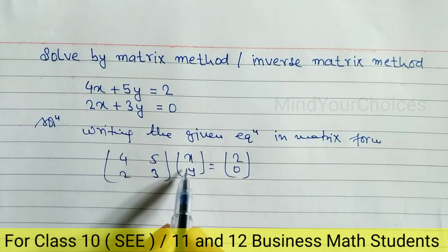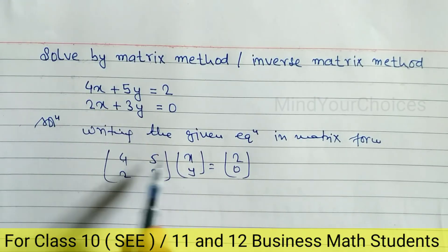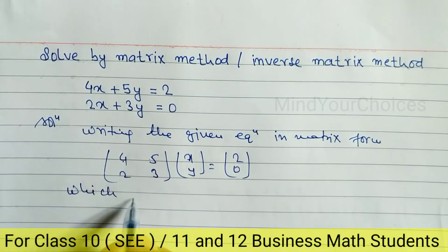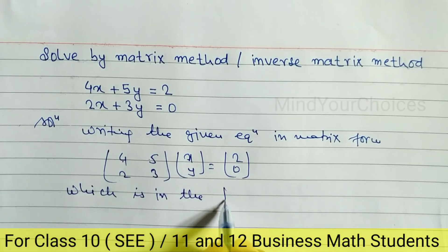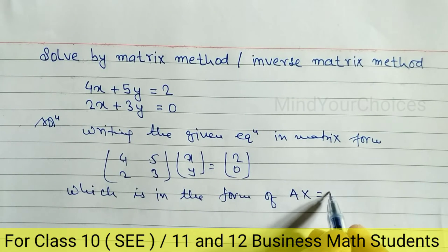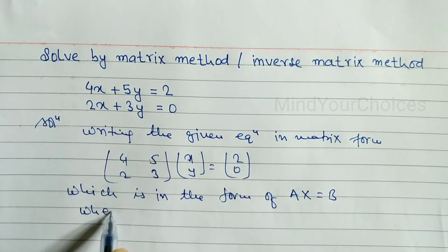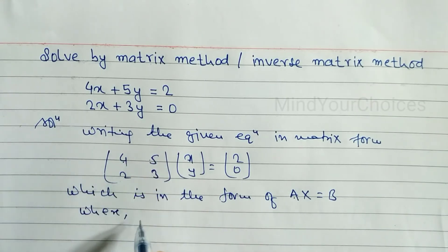When you multiply this out, we get 4x + 5y, because 4 times x is 4x and 5 times y is 5y. This is in the form AX = B.